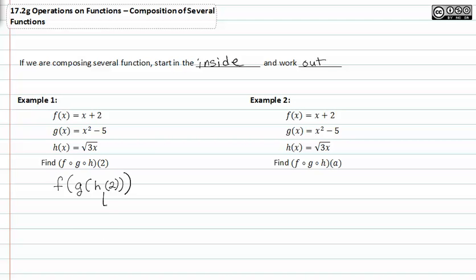Then let's find h of two and then substitute that back in for the g of something function. So h is the square root of three times x, or three times two. When we evaluate this we get the square root of six.